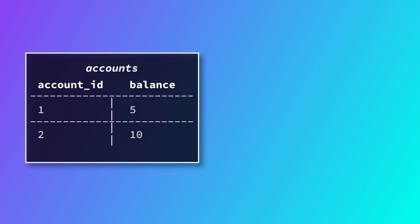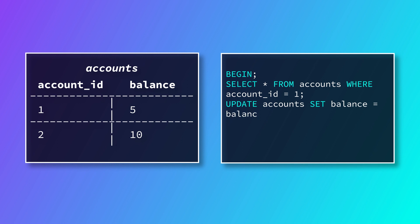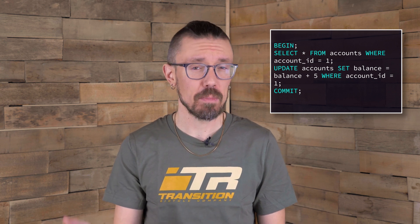For example, imagine we've got this table of bank account information called accounts, and our database has sent this transaction to update the balance of account number one. Notice that we're using a regular SELECT statement here, not SELECT FOR UPDATE. There's nothing wrong with this transaction — let's call it TX1. It will process and update the row just like it's supposed to.